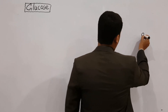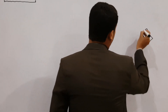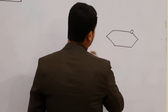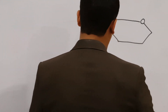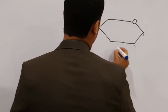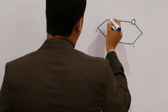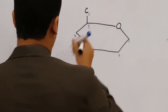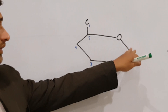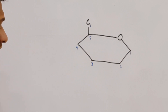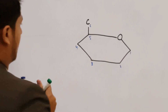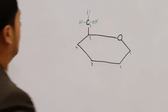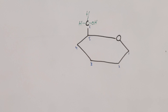Let me draw the ring form of the glucose molecule. The oxygen is bonded with carbon number one, and the glucose molecule contains six carbons: carbon one, two, three, four, five, and carbon number six. Each carbon contains hydrogen, hydrogen, and hydroxyl groups. Carbon number six contains a hydroxyl group and two hydrogens. This is a typical glucose structure in ring form.